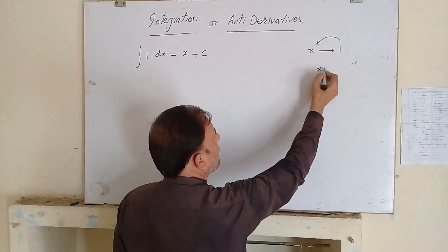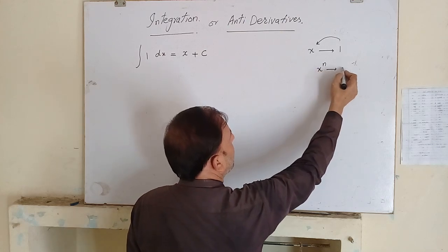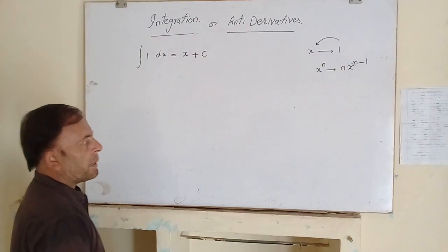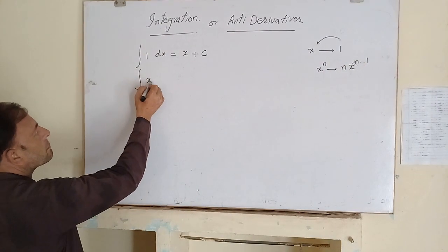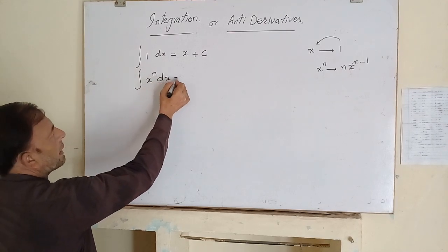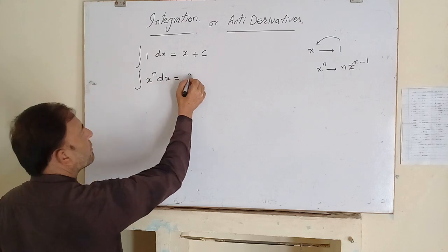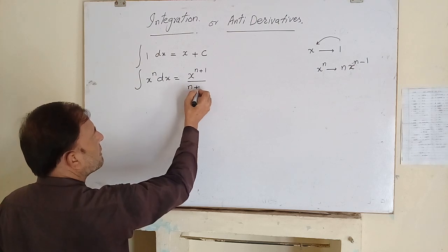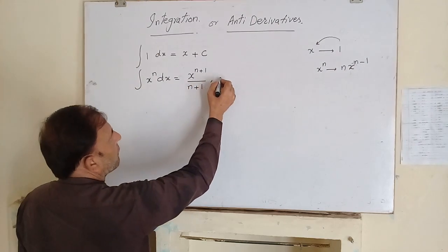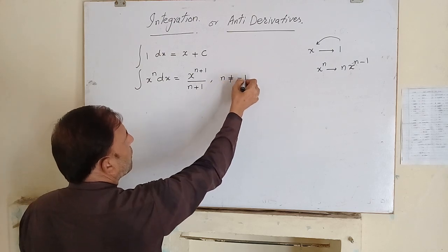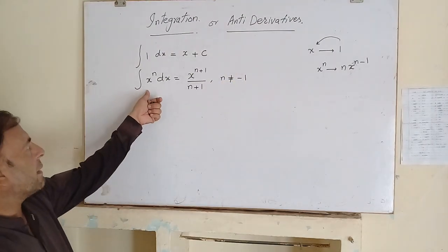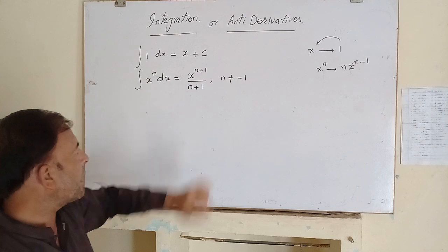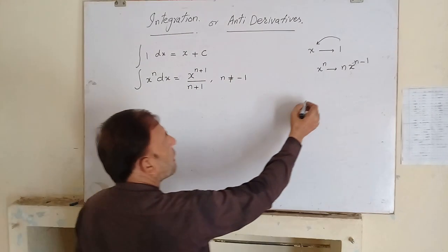We have a formula that the derivative of x power n is equal to n times x power n minus 1. In integration, if we have to integrate x power n, then its integration will be equal to x power n plus 1 over n plus 1. If we differentiate x power n plus 1 over n plus 1, its derivative gives back x power n.